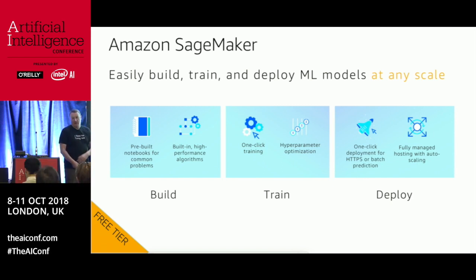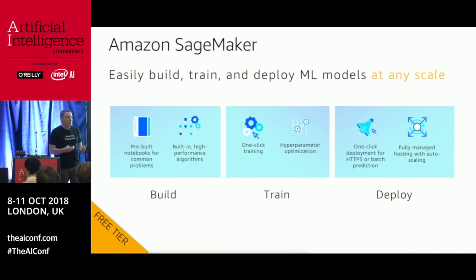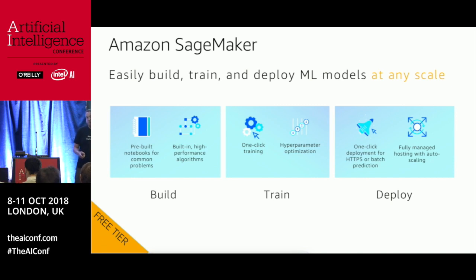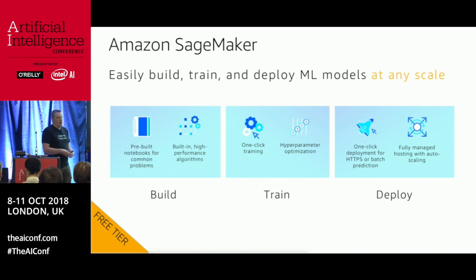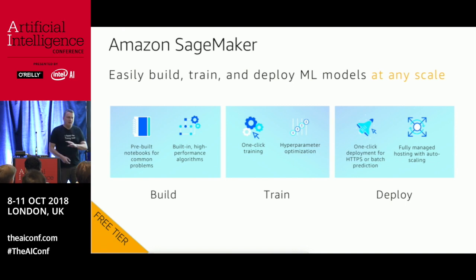We have a number of modules. In a nutshell, we have three big blocks. The first lets you build quicker. We provide managed EC2 instances with Jupyter and all the libraries for machine learning and deep learning pre-installed, so you can open a notebook in minutes. We also have a collection of built-in algorithms, which are truly innovative and a huge time saver.